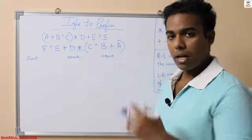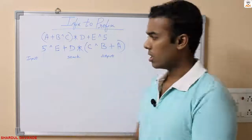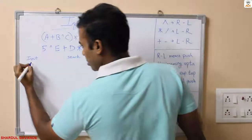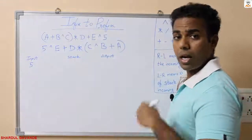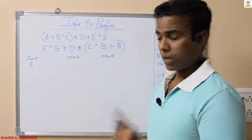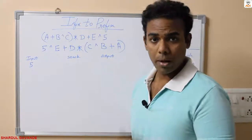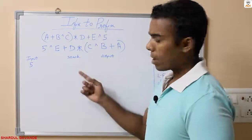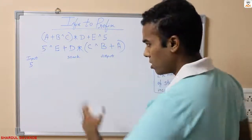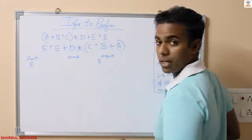Now I will traverse from left to right and all the steps would be same as that of infix to postfix conversion. So let us start by traversing from left to right all the elements. First element is 5. If the character is an operand then we'll directly push it to the output. Since 5 is not an operator, there will be nothing in the stack — in the output I will directly write 5.